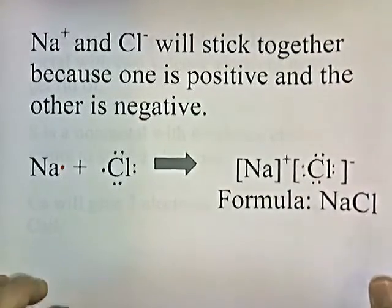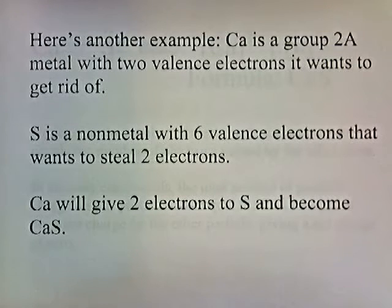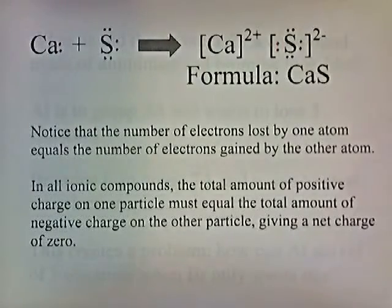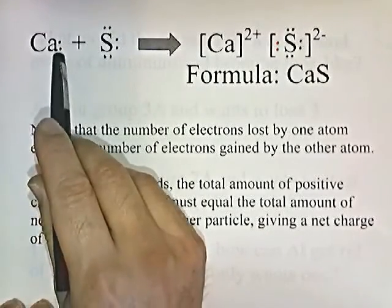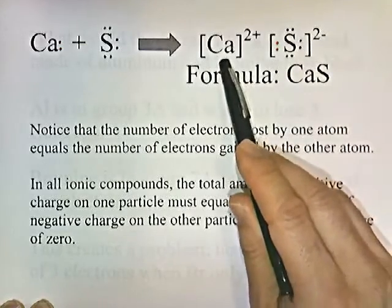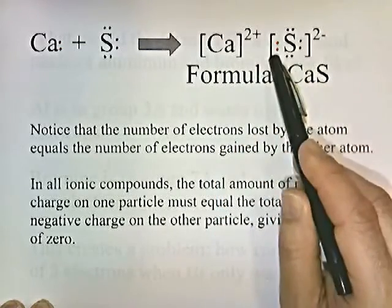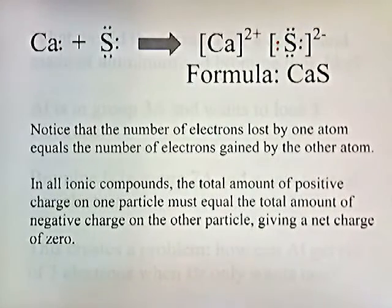Here's another example: calcium is a group 2A metal with two valence electrons that it wants to get rid of. Sulfur is a non-metal with six valence electrons that wants to steal two electrons to get an octet. Calcium transfers its two electrons to sulfur; calcium gets a plus two charge and sulfur, now with eight electrons, gets a negative two charge. The compound formed is CaS.